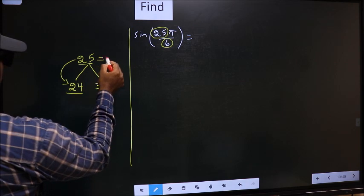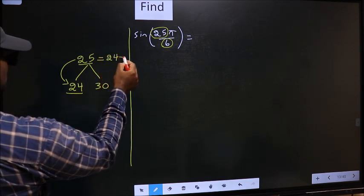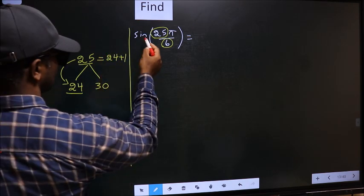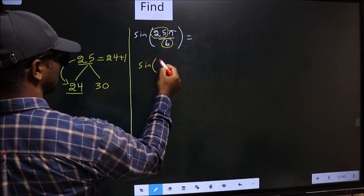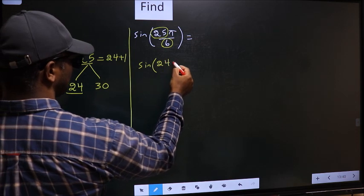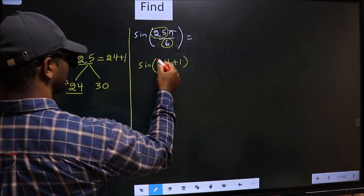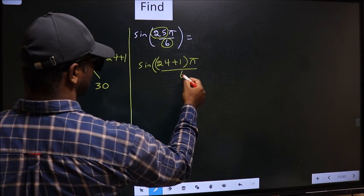So 25 should be written as 24 plus 1. So this will change to sine. In place of 25, now I write 24 plus 1, π by 6.